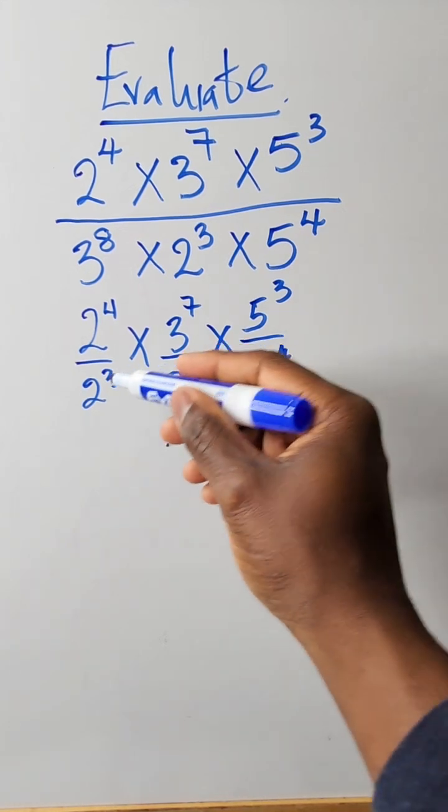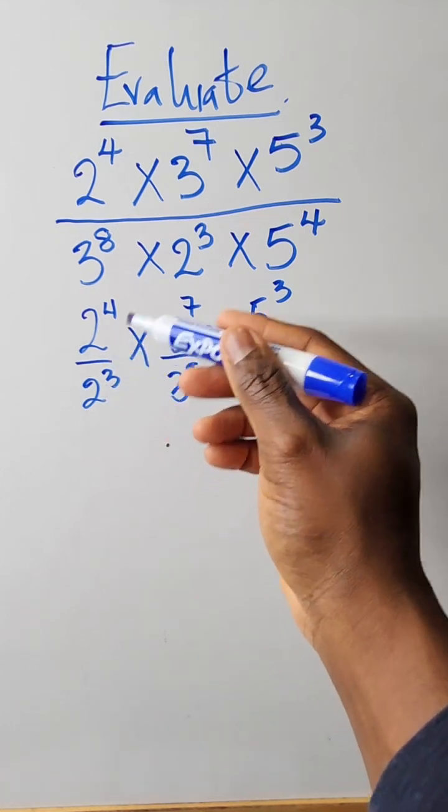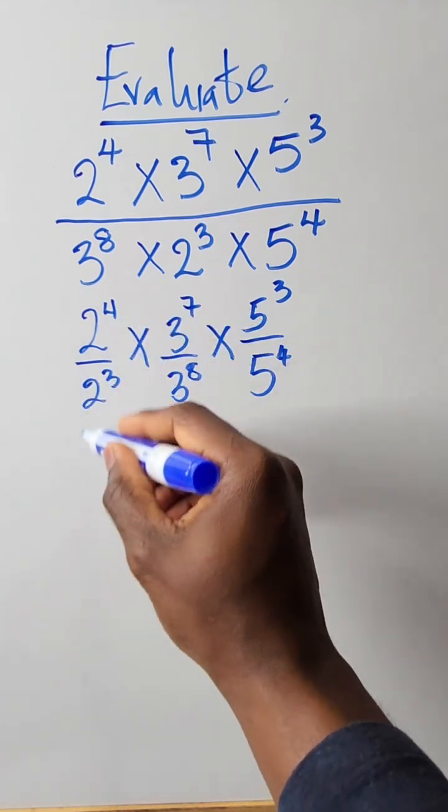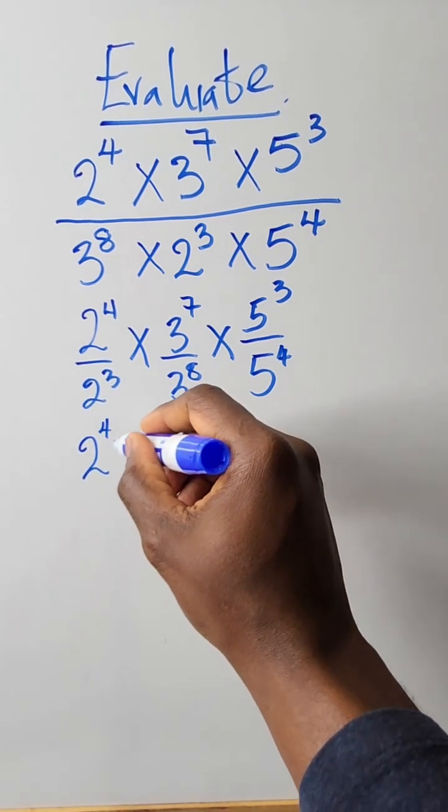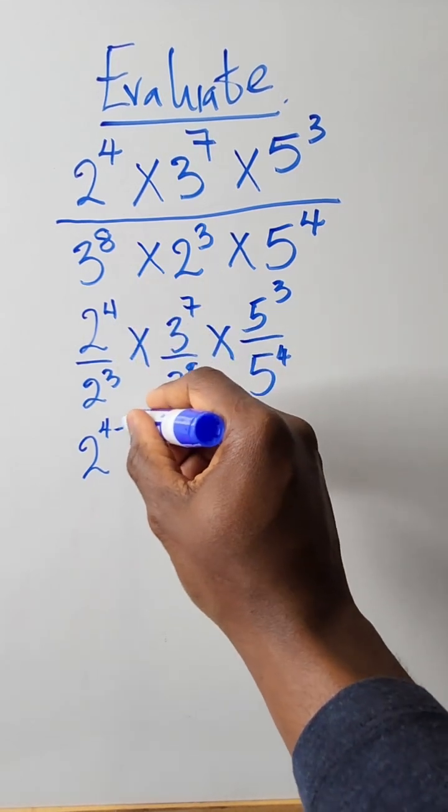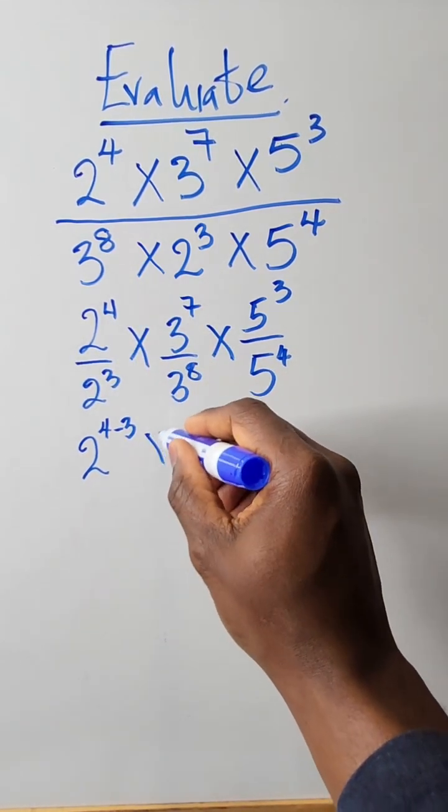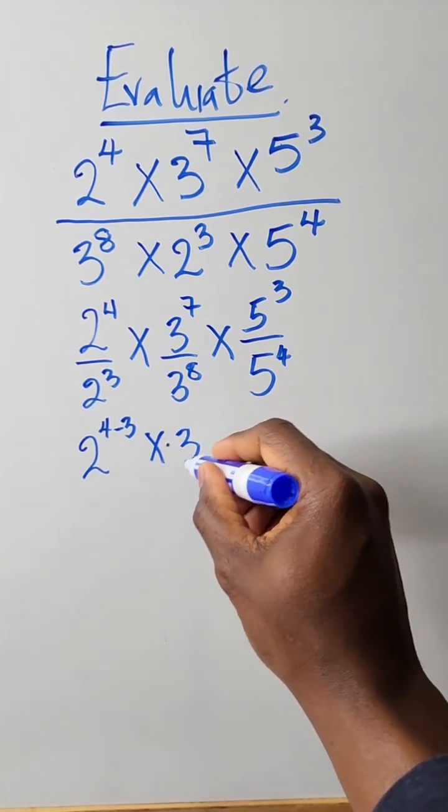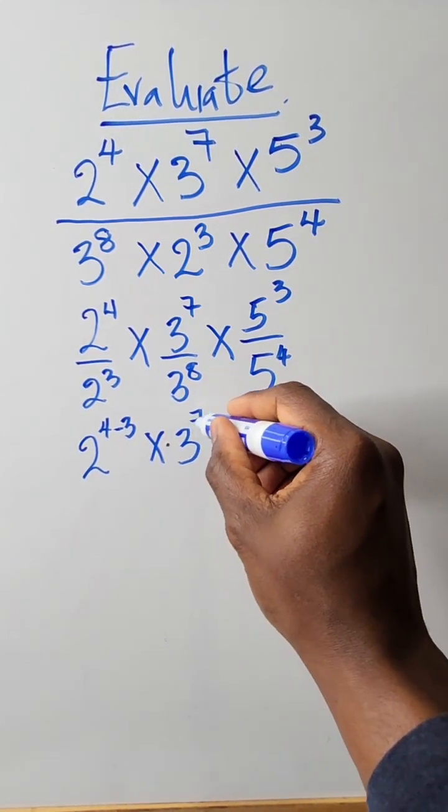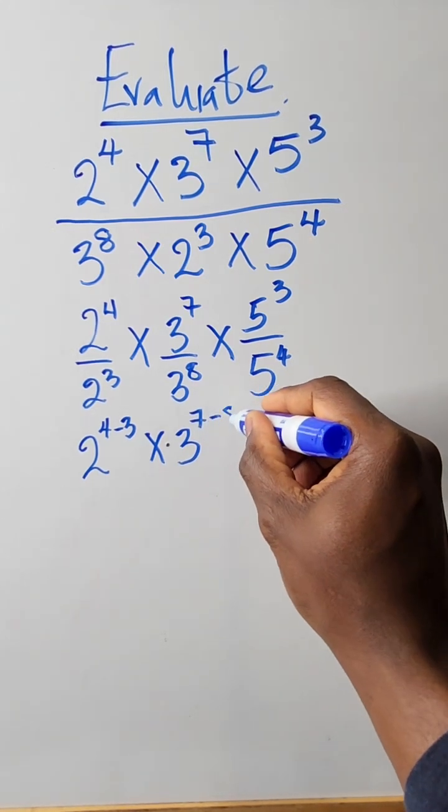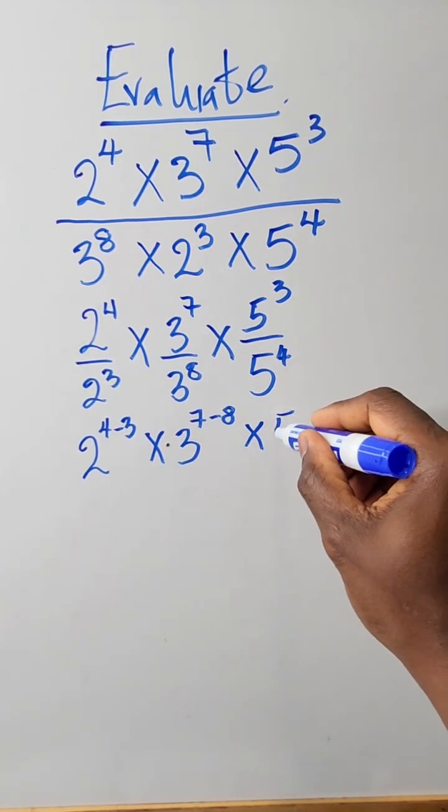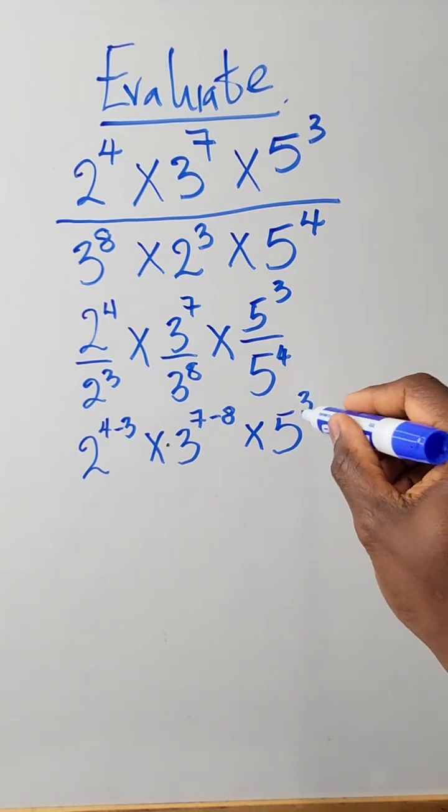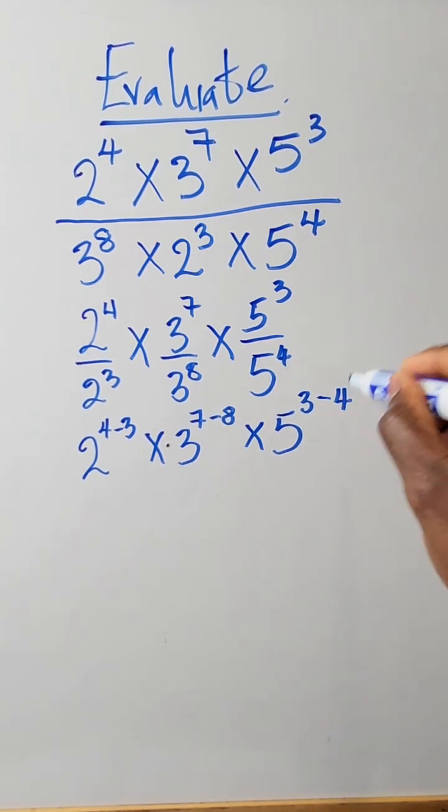Okay, so we'll use our division method. So this becomes 2 raised to power 4 minus 3 times 3 raised to power 7 minus 8 because we're dividing times 5 raised to power 3 minus 4.